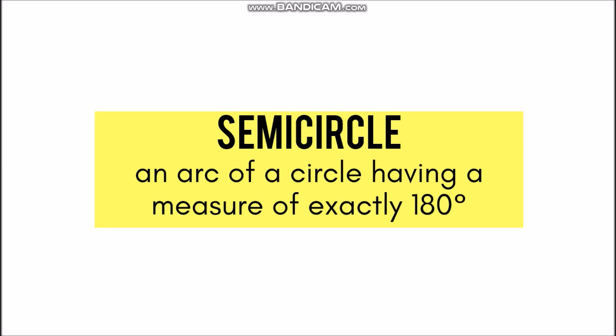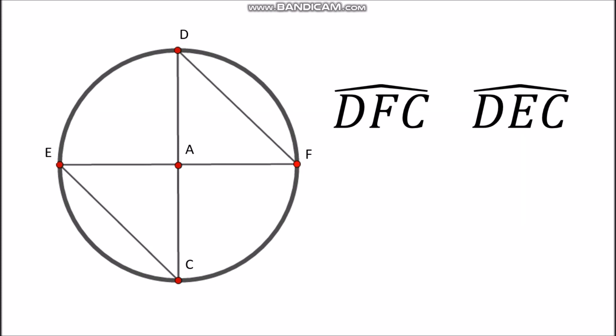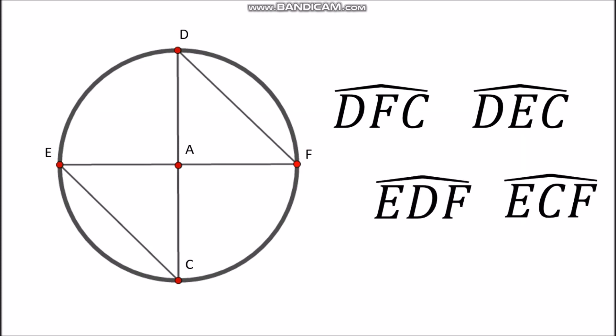A semicircle is an arc of a circle having a measure of exactly 180 degrees. The whole circle measures 360 degrees, and a semicircle is half of it, which is why it measures 180 degrees. The semicircles are arc DFC, arc DEC, arc EDF, and arc ECF. Notice that the endpoints of the arc are the endpoints of the diameter.